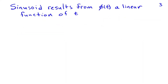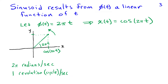We get a sinusoid when we let the angle phi(t) vary in a linear manner — that is, phi(t) becomes a linear function of t. In the simple case where phi(t) = 2π·t, the hypotenuse is rotating at a rate of 2π radians per second, which means 1 revolution per second. Defining the angle this way, x(t) — the projection on the x-axis — is cosine(2πt). And that is a sinusoid.